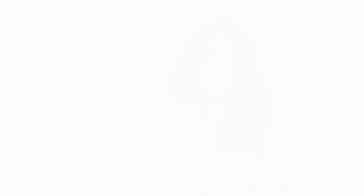But finally, in 1978, it was possible to do so, and the convention entered into force. And finally, the Inter-American Court of Human Rights was created in 1979. That's the date. Thank you.